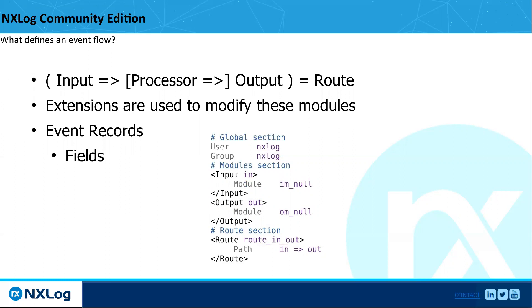Routes can also have processors. The idea of a processor is it sits in the middle — it'll do some kind of formatting change, some kind of buffering, just something that involves the flow. The fourth type of modules we have are extensions. Extensions are used to modify existing modules — inputs, outputs. For example, if you wanted to add syslog headers to an event or parse an event, that can all be done with extensions.